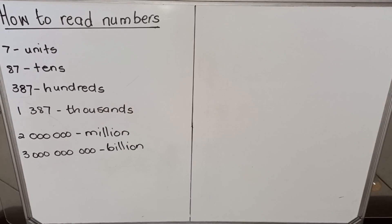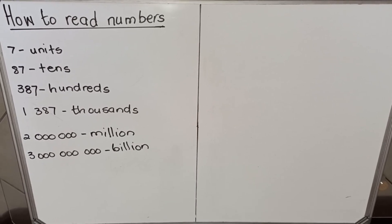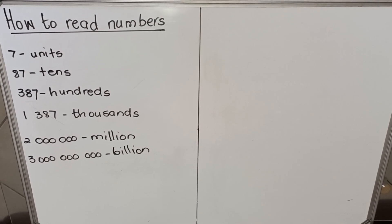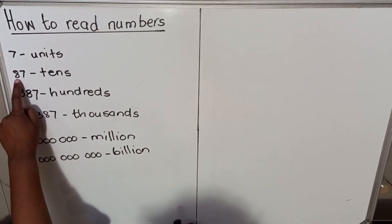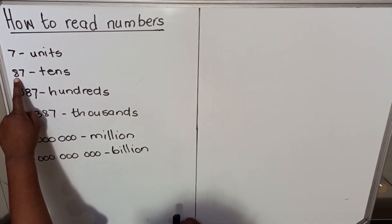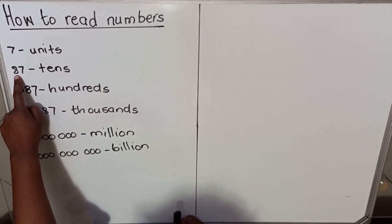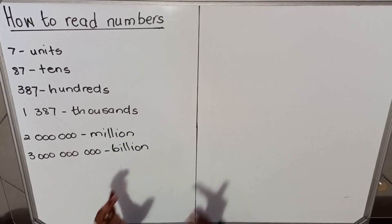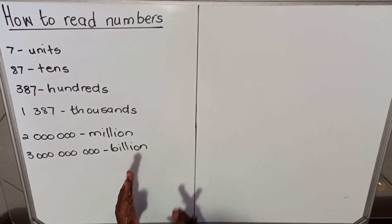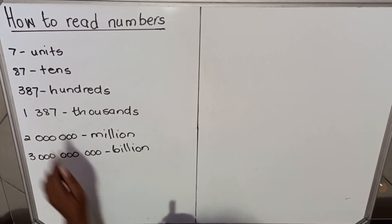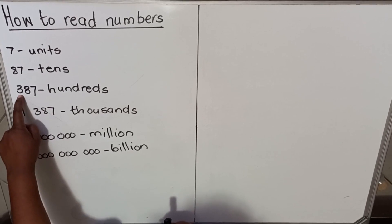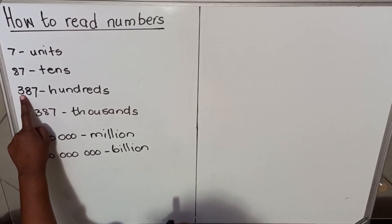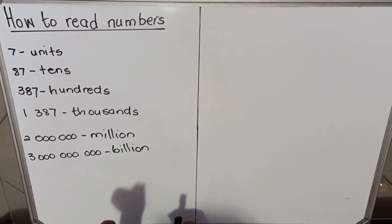Hello everyone. In this video I'm going to help you on how to read numbers. If you have just one number, that should be a unit. If you have two numbers, the eight is the tens. When you call it you say 87. This one is the hundreds — the third position. Numbers are called according to the position they have in the sequence. So this is one, two, three — number three is hundreds. When you call this out it's three hundred and eighty seven.